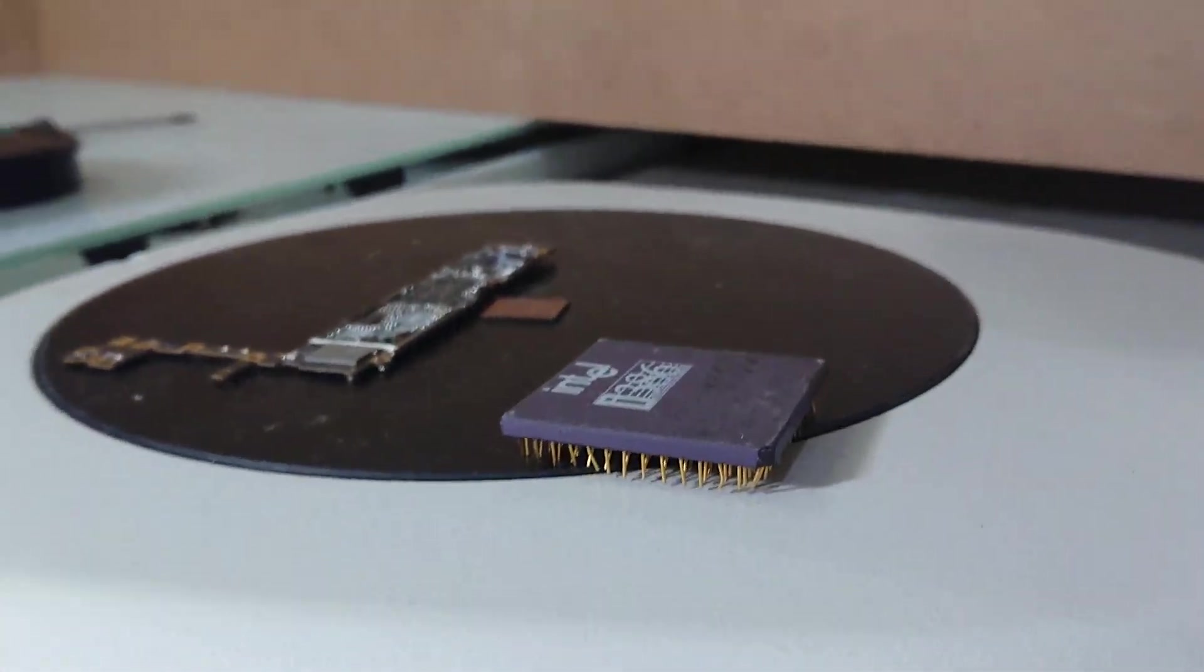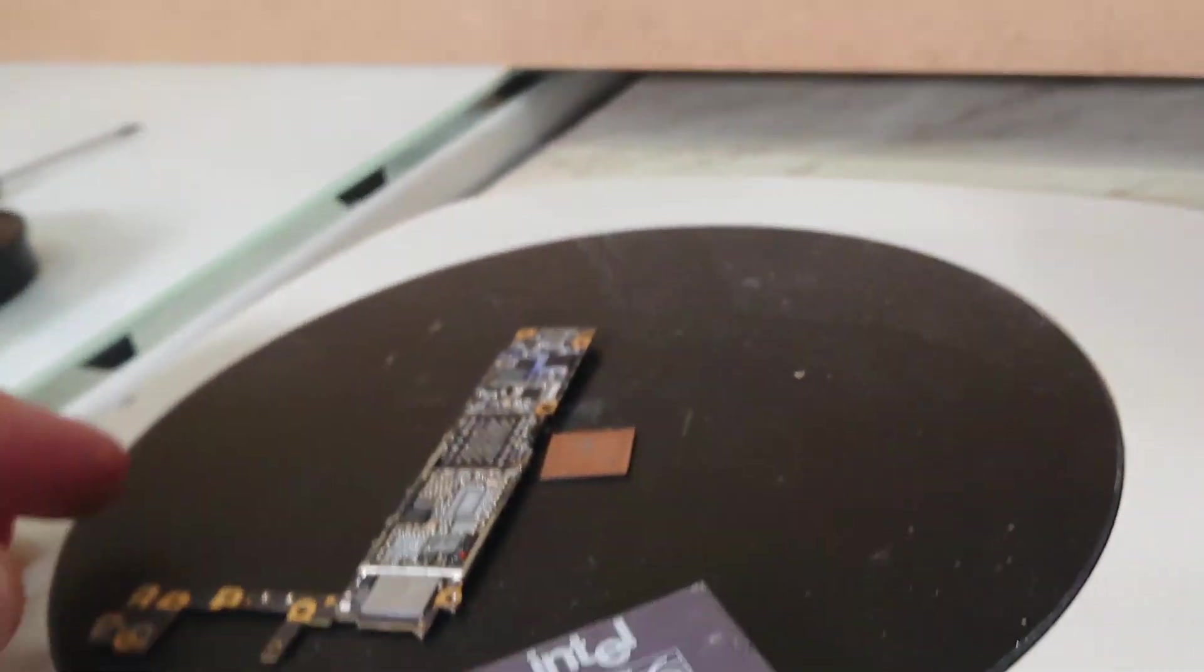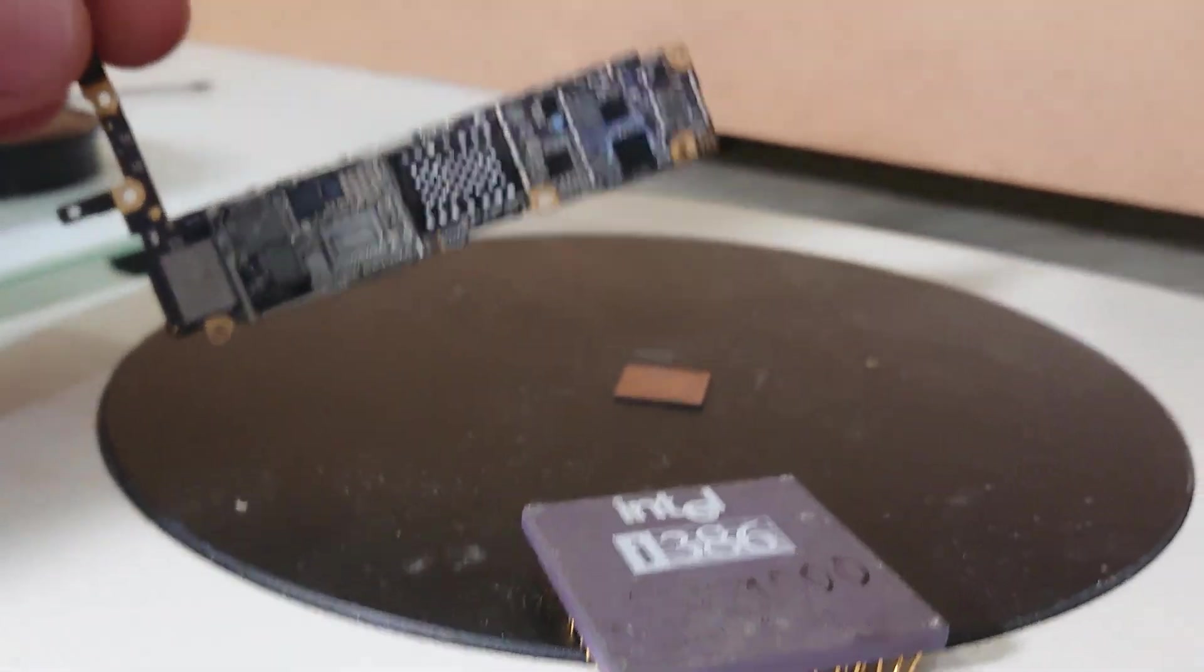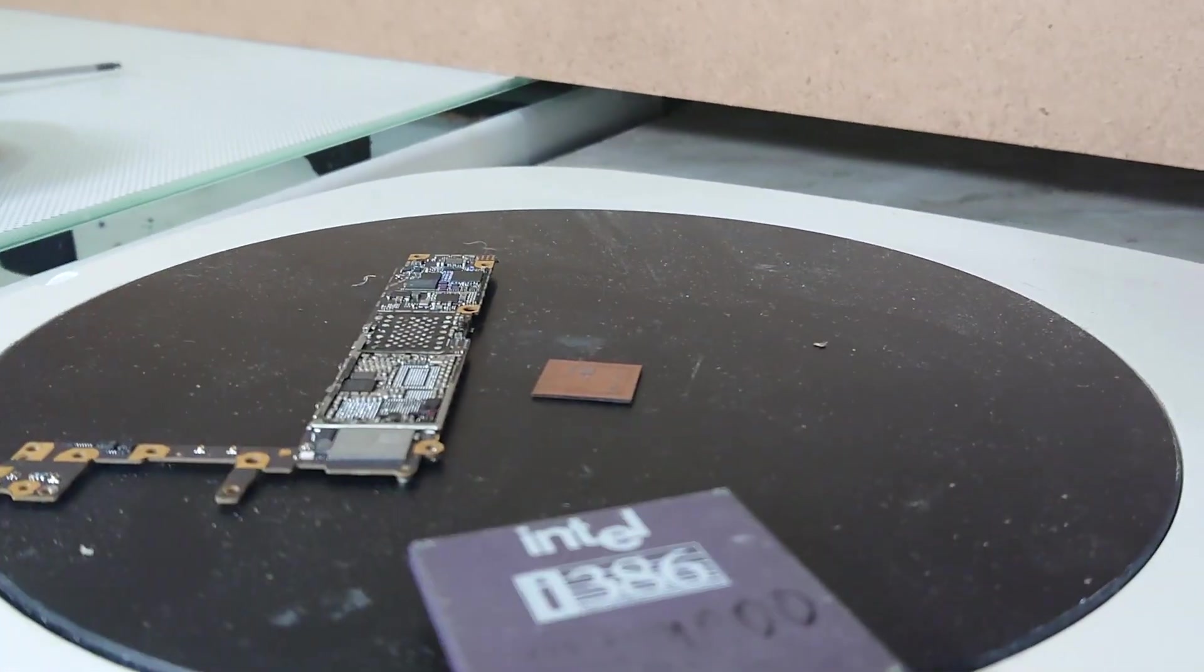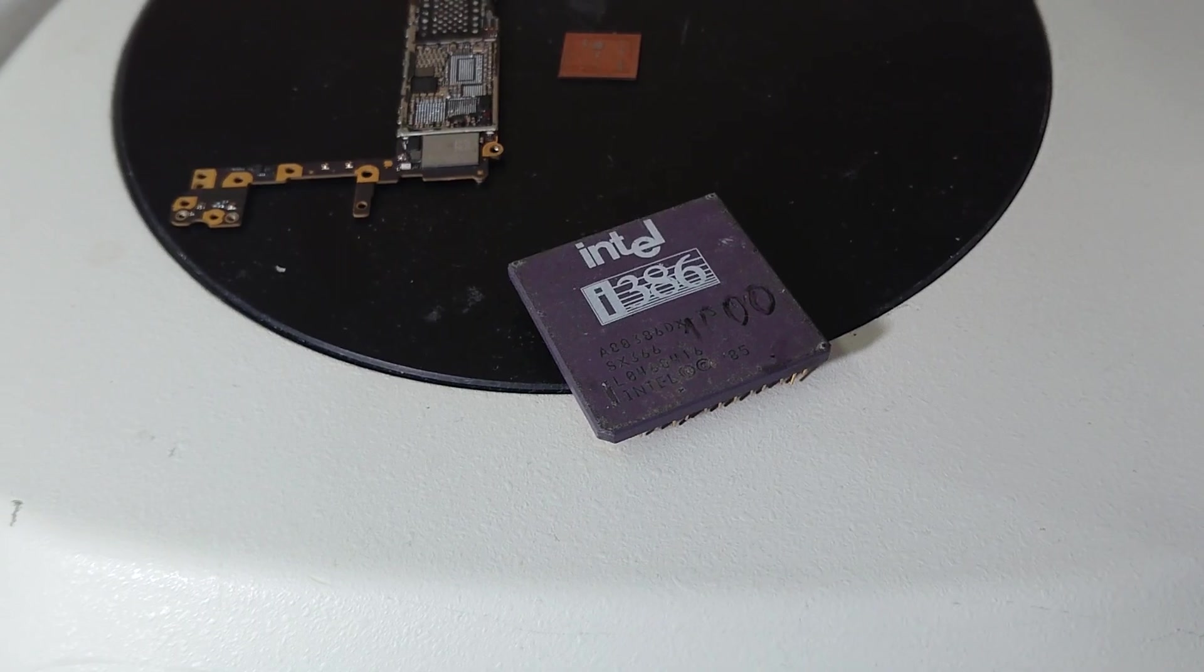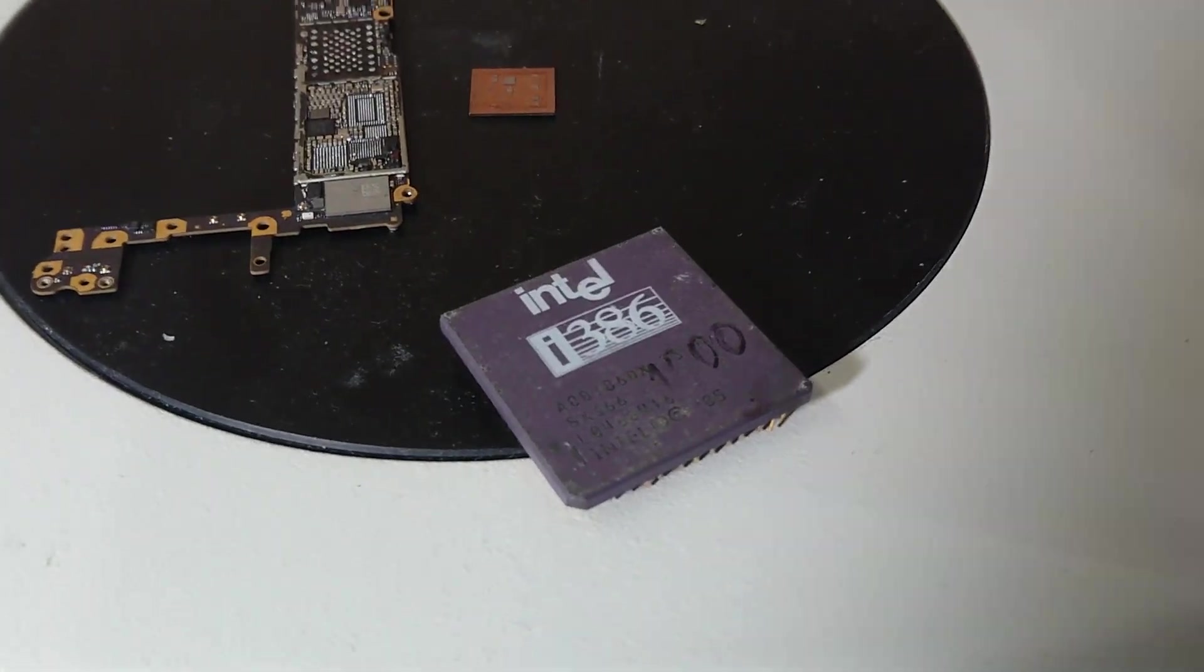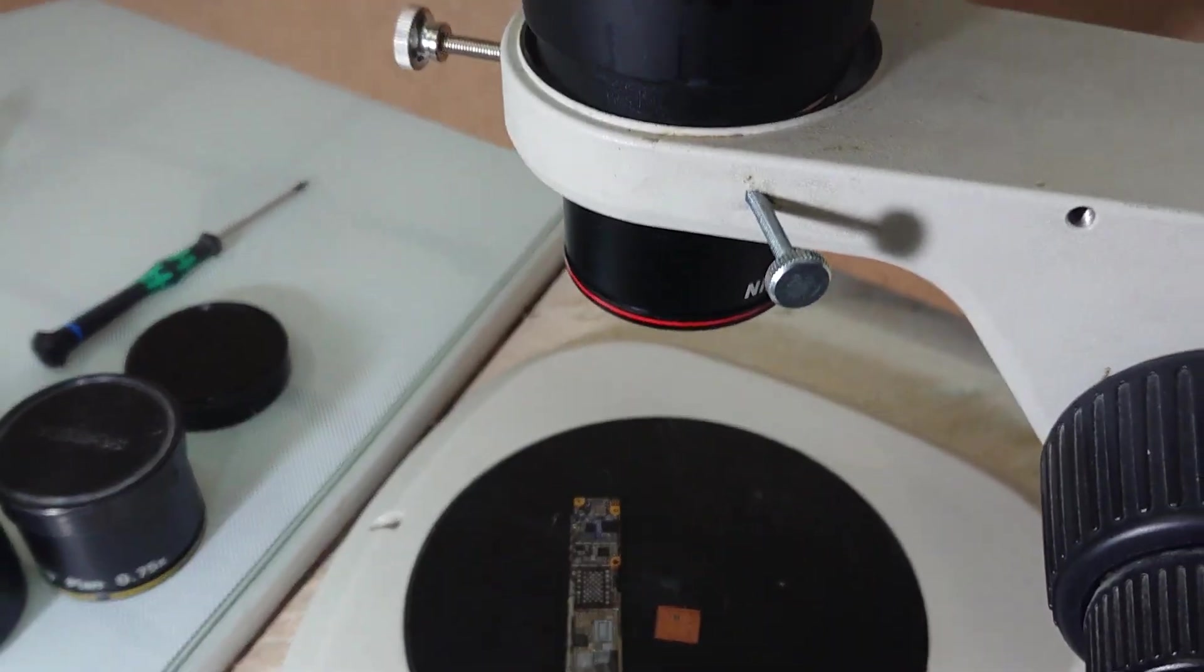And we will try to see the field of view using Apple iPhone 7s motherboard, Apple's A-series processor and Intel's i386 processor to see how things work.